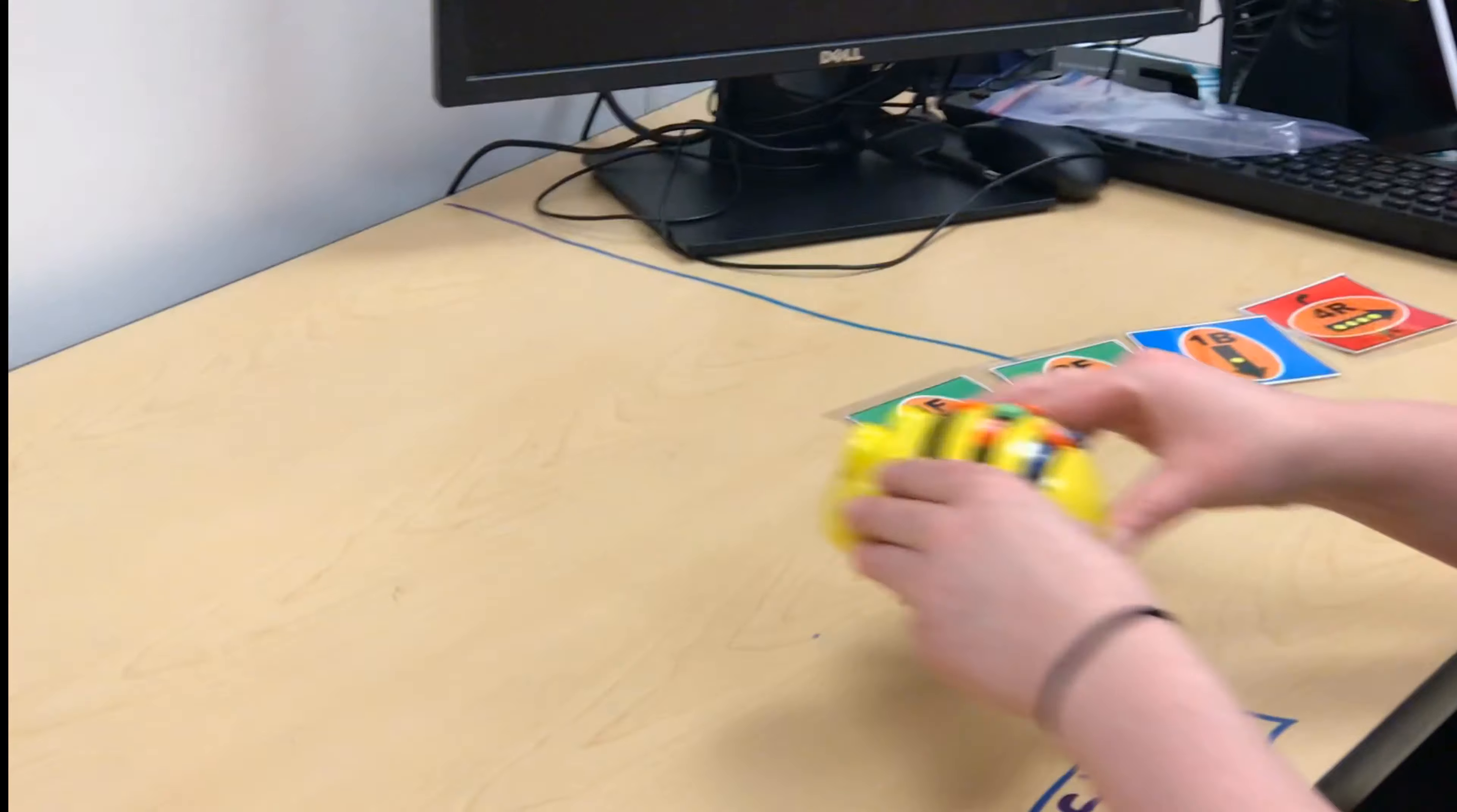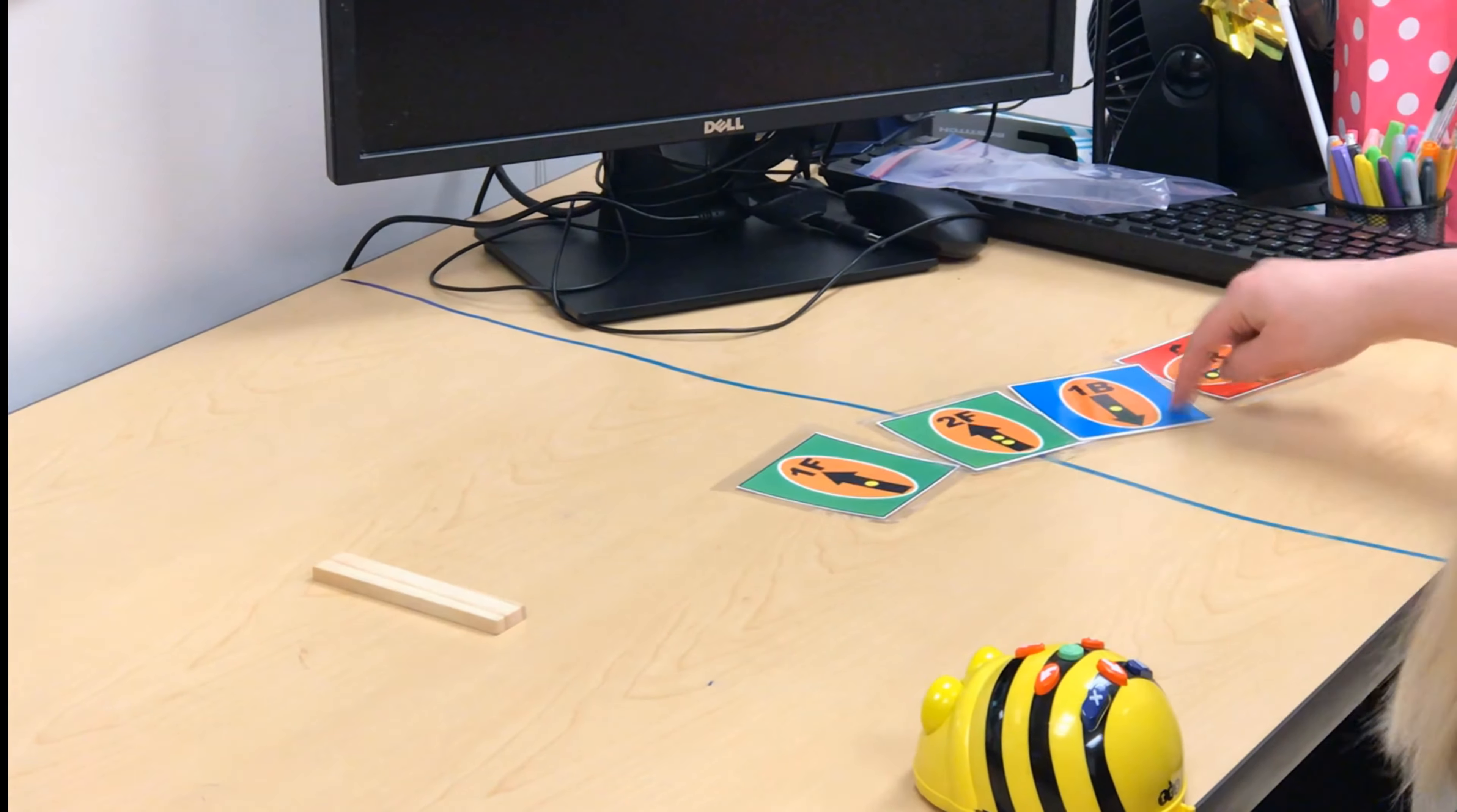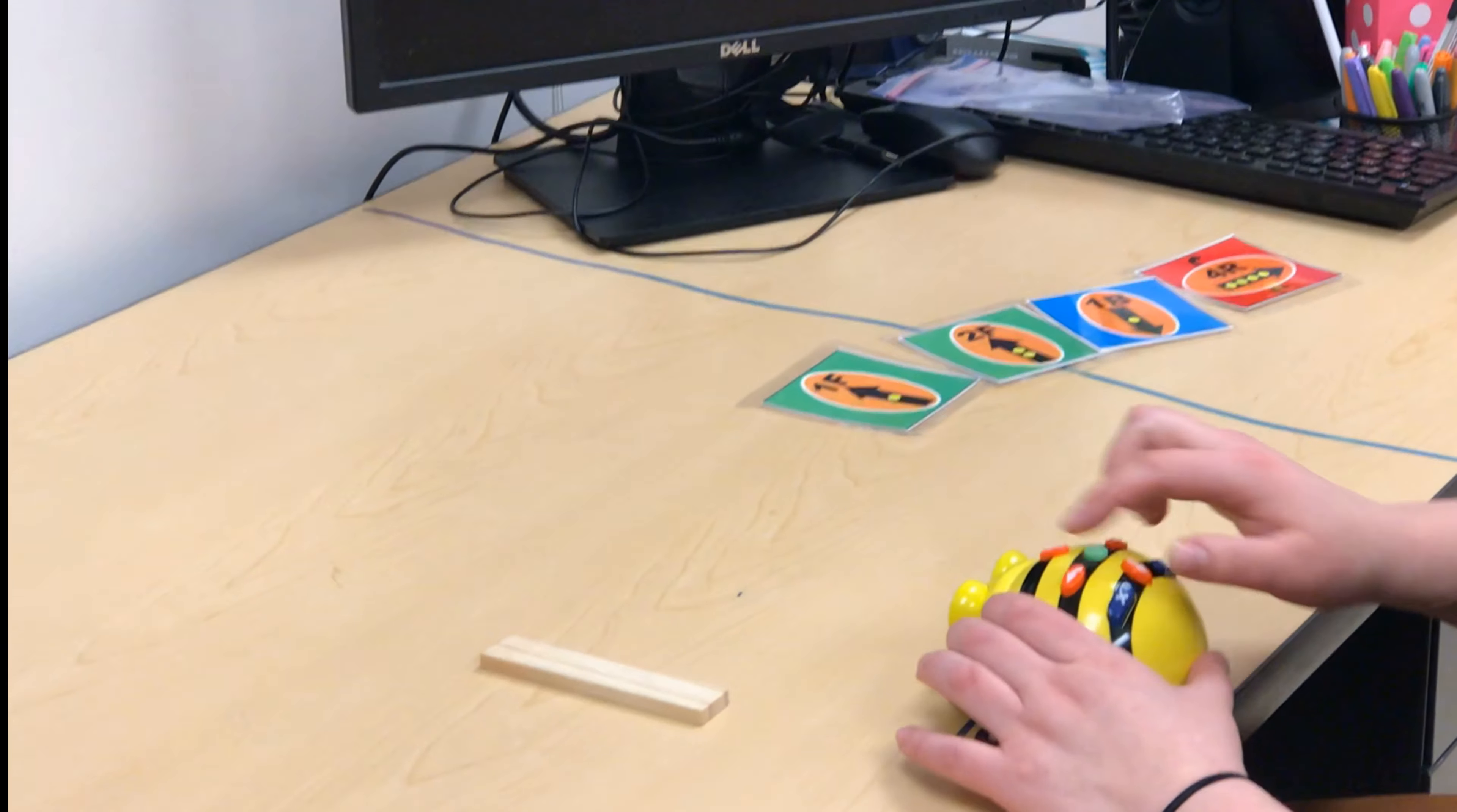We'll do this. We're going to do one more just to make sure that we know what we're doing. Hit clear. Bee-Bot goes on start. Let's look at my code. Forward one, forward two more times: one, two. Back one, and then four right: one, two, three, four. I'm going to predict it's going to land right here.